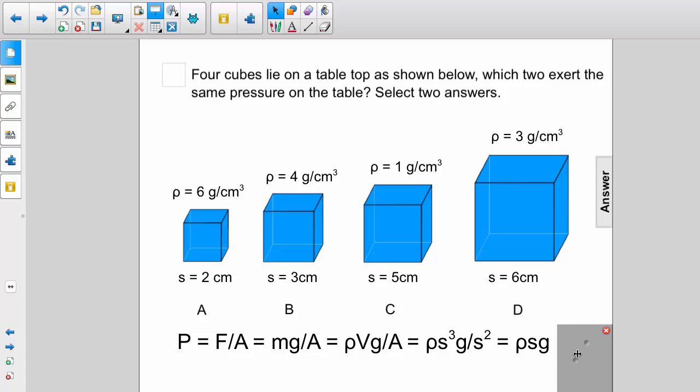And so we have the expression ρ times s times g is the pressure. Well, g is the same for all of these. So what we're going to look at is the density times the length of one side.